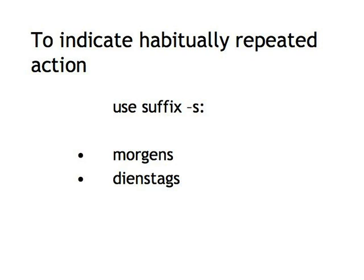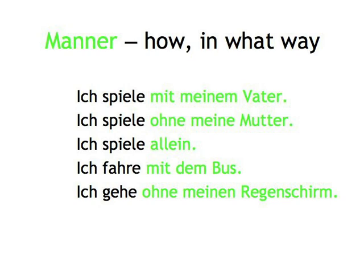Manner — how, in what way. There are lots of ways to express how you do something: 'Ich spiele mit meinem Vater,' 'Ich spiele ohne meine Mutter,' 'Ich spiele allein.' You can talk about the means you use to do something: 'Ich fahre mit dem Bus,' or anything else that describes in what way you do something, like 'Ich gehe ohne meinen Regenschirm.' The possibilities are many, and we'll leave them to your imagination.